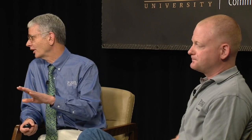Looking ahead, one of the big issues is land tenure — particularly leased versus owned crop acres. How is continuity of carbon sequestration insured? Current contracts are with the farm operator, so what happens when cropland changes hands, either by a change in ownership or a change in lease? A lot of leases in Indiana are on a one-year basis, some three to five years. From a legal perspective, it's a relatively short-term arrangement — and as we've established, carbon sequestration is a long-term issue.